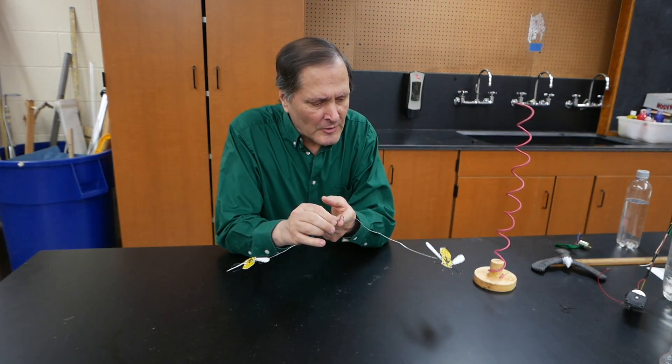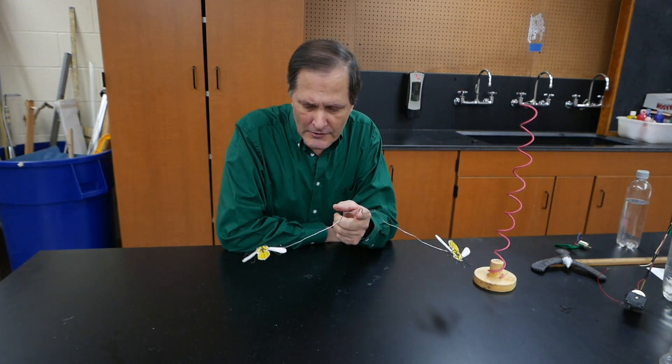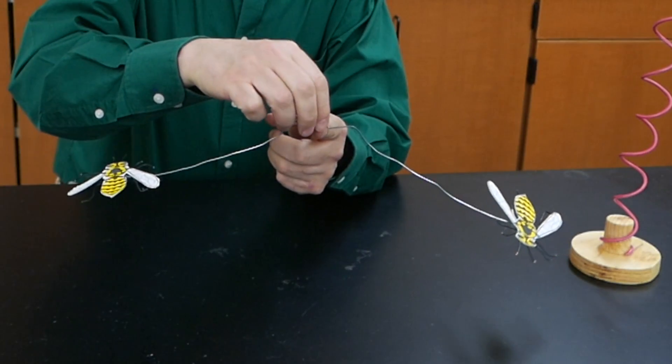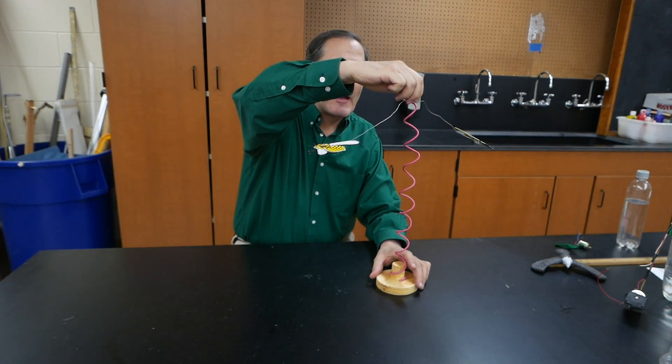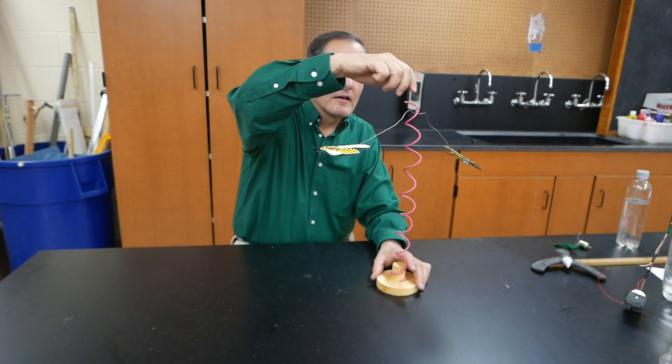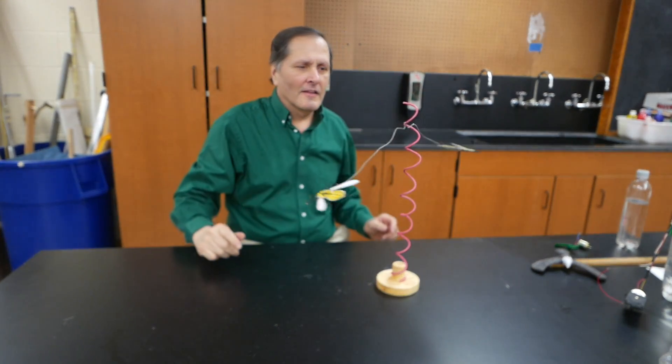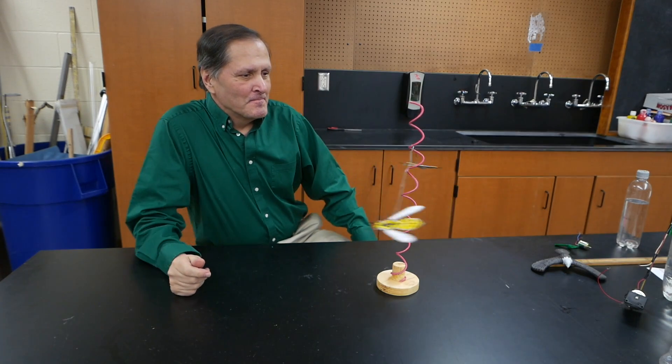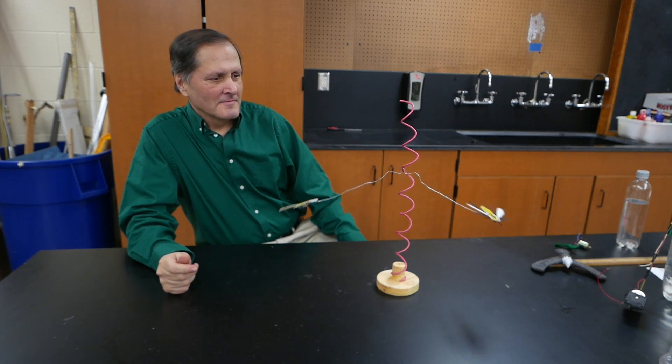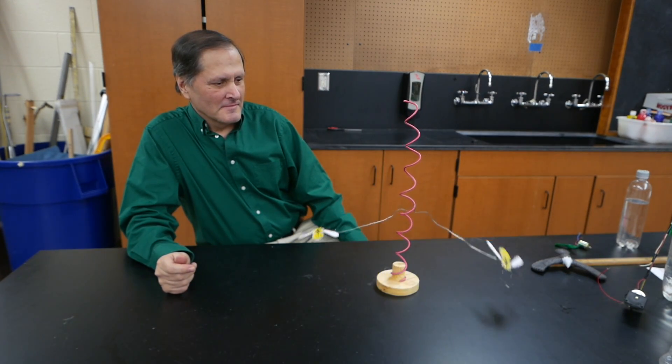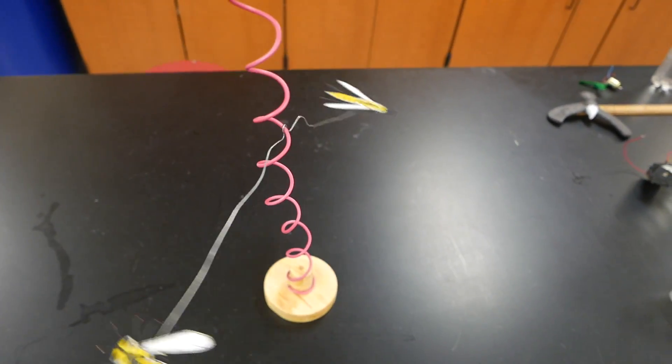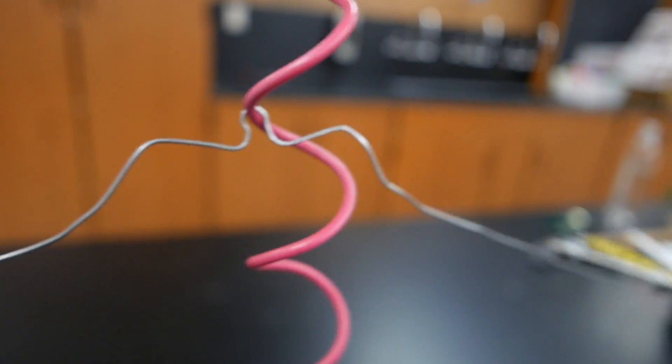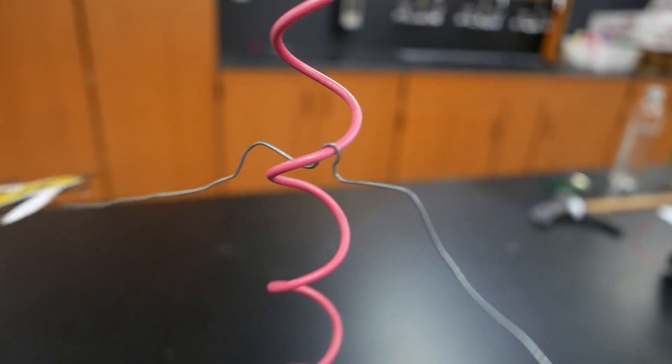Now here's a set of balancing bees, or yellow jackets, when I put them on this coiled wire. Well, let's see what happens. The pitch of the coil is steep enough that the wire slides down it and turns the bees in the process.